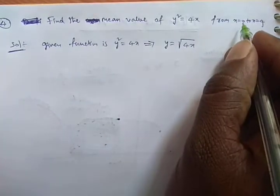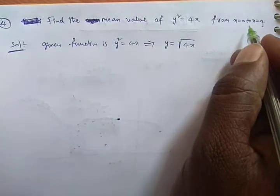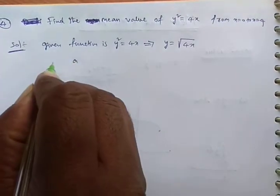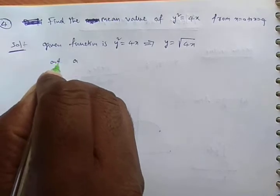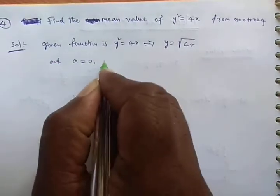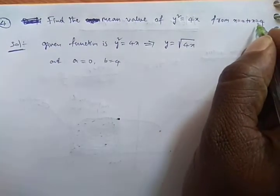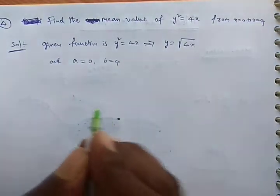What is the lower limit here? Your lower limit is 0, upper limit is 4. So a = 0, b = 4. x = a means a is 0, x = b is 4. This data is enough.